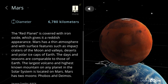Mars, diameter: 6,780 kilometers. The red planet is covered with iron oxide, which gives it a reddish appearance. Mars has a thin atmosphere and with surface features such as impact craters of the Moon and valleys, deserts and polar ice caps of Earth. The days and seasons are comparable to those of Earth. The largest volcano and highest known mountain on any planet in the solar system is located on Mars. Mars has two moons, Phobos and Deimos.